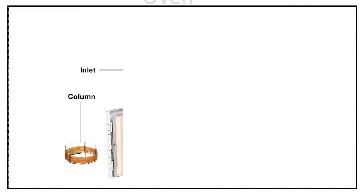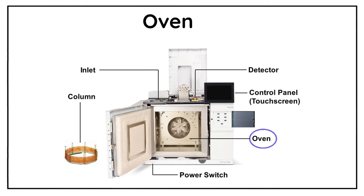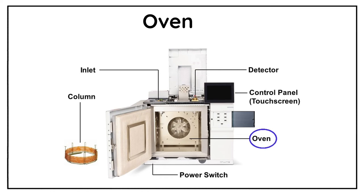Now comes the third part of the GC instrument, which is the column oven. This is how a typical GC column oven looks from the inside. The main function of the column oven is to provide high temperature as per analysis requirements. Generally the GC column is kept inside the oven, with one end of the column connected to the inlet and the other end connected to the detector.